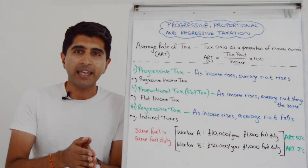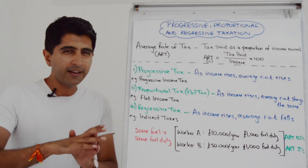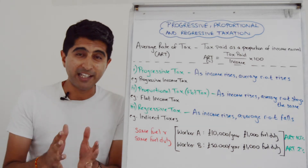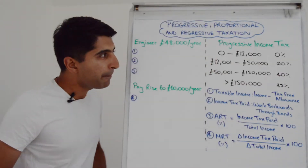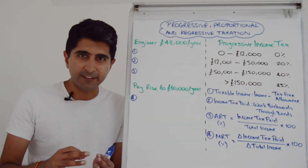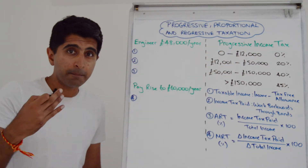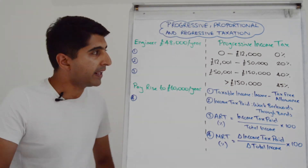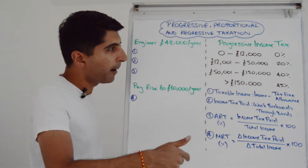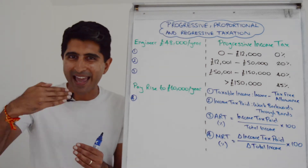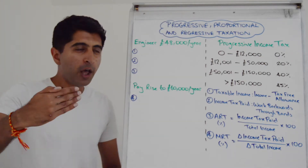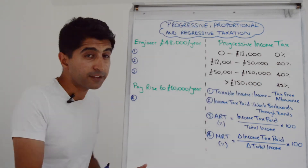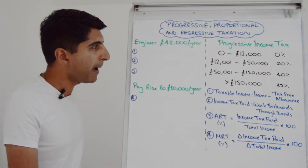Now let's get into a progressive income tax system in more detail — understand how it works and do some key calculations. Here is an example of a progressive income tax system with made-up numbers. You can see there are different bands, and linked to those bands are different tax rates. As people's income increases, they pay higher rates of tax and the average rate of tax will therefore be increasing. Crucially, you only pay the tax rates for the income earned between the numbers in each band.